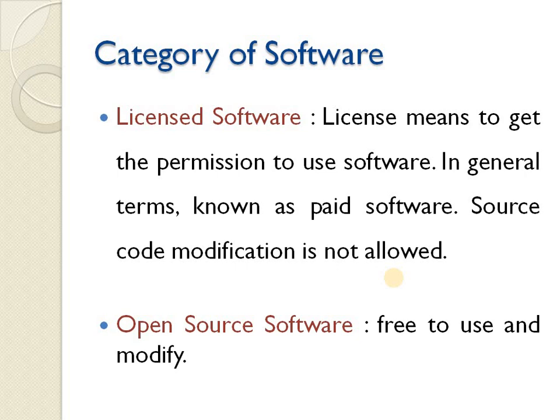Software is mainly categorized into two categories: licensed software and open source software. Licensed software requires a license to use — in general terms they are paid softwares. After paying a fee you are granted permission to access the software, but you still cannot modify the source code. You are paying for access only. Open source software, on the other hand, is free to use and modify — freely available on the internet to download and modify.